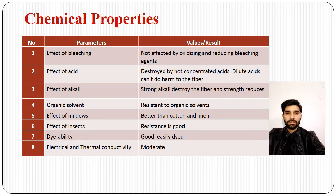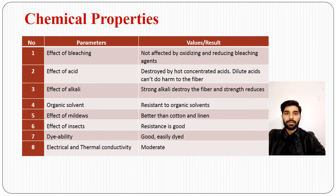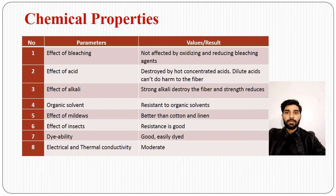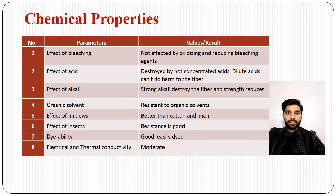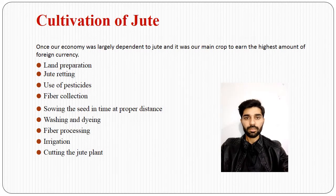Regarding chemical properties: effect of bleaching — not affected by oxidizing and reducing bleaching agents. Effect of acids — destroyed by hot concentrated acids; dilute acids cannot harm the fiber. Effect of alkali — strong alkali destroys the fiber and strength is reduced. It is resistant to organic solvents, better than cotton and linen. Effect of insects — resistance is good.